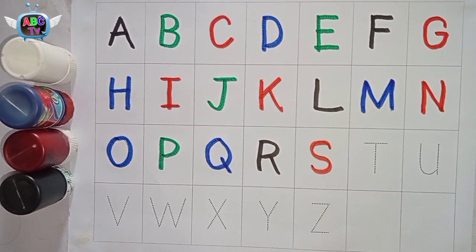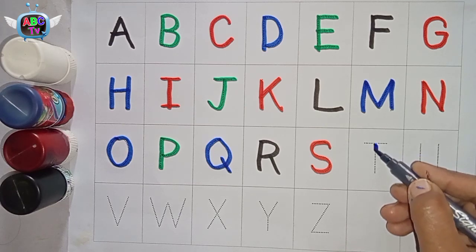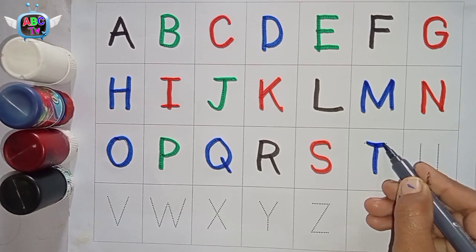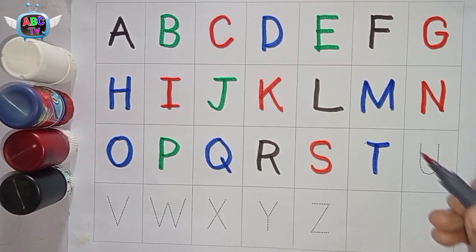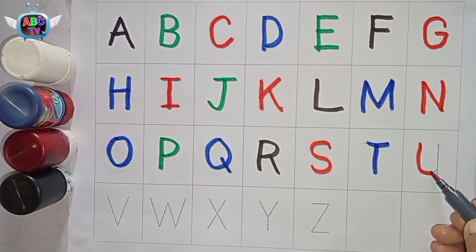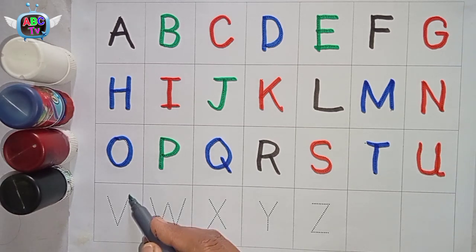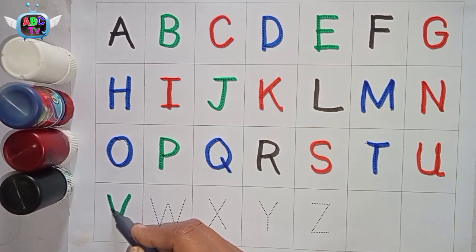S. S for Star. T. T for Tomato. U. U for Umbrella. V. V for Van.